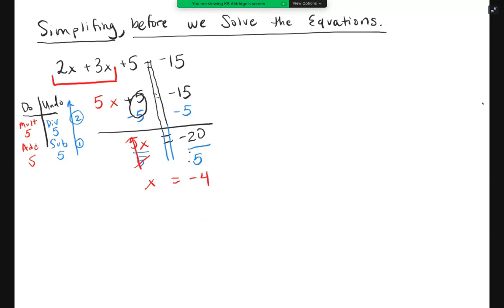My check is x equals negative 4. Make sure you always tell the audience what your x equals. Then you plug it into your original equation. It's going to be 2 times x plus 3 times x plus 5 equals negative 15. I'm going to plug in my x. 2 times x, 2 times negative 4 plus 3 times negative 4 plus 5 equals negative 15.